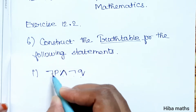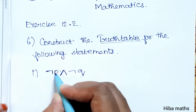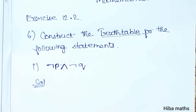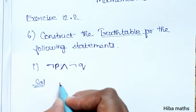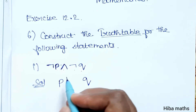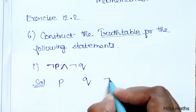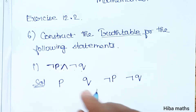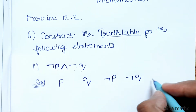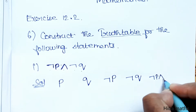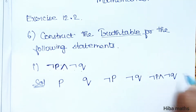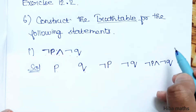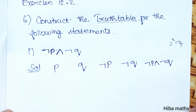If A is NOT P and NOT Q, the symbol is ¬P ∧ ¬Q. In the solution, we will take two variables P and Q. That is the first rule of the truth table. We need NOT of P, NOT of P and NOT of Q. We have two variables, so 2 power 2 equals 4 possibilities.